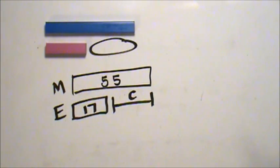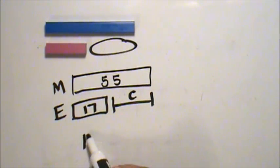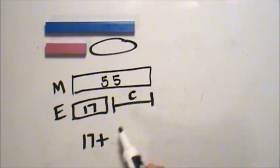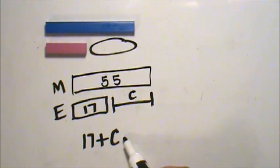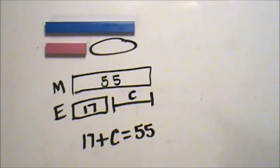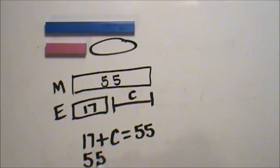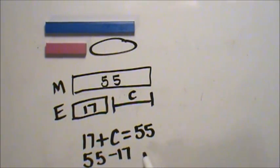I can use my strip diagram to help me write that equation: 17 plus C gives me the whole, which is 55. To figure out C, I can say 55 minus 17 equals C.